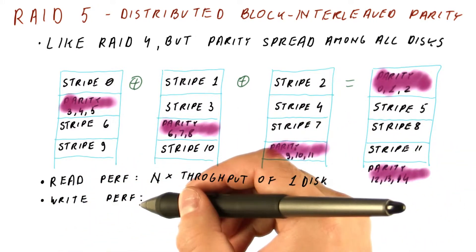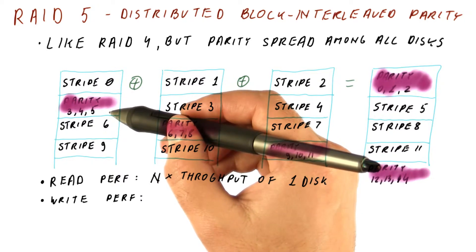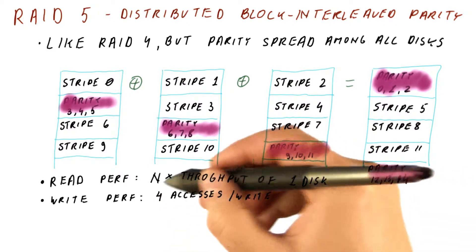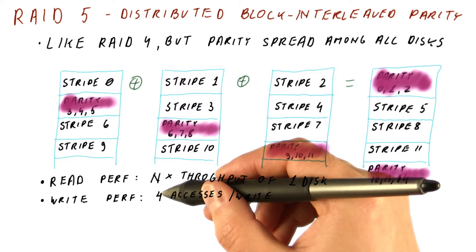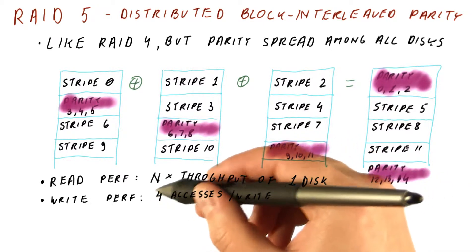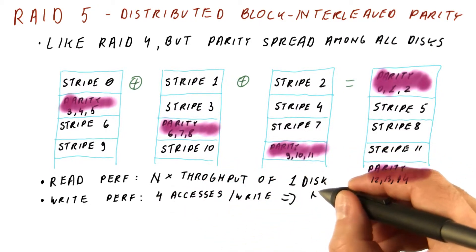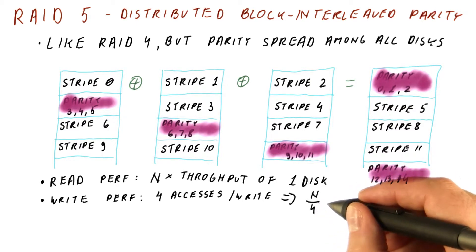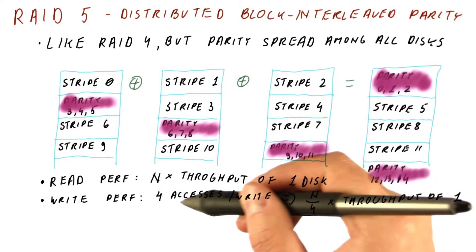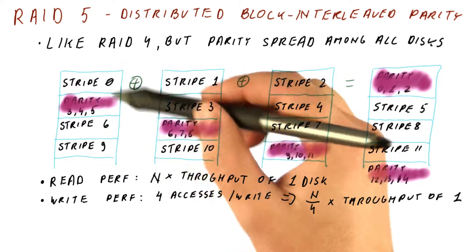Write performance is still affected by having to read and then write the data and the parity. So a single write results in four accesses — we would read the data block and the parity, and then we would write the data block and the parity. So there are four accesses per write, but they're distributed among all the disks. So we get n over 4 times the throughput of one disk. In this case, with four disks, write performance equals the throughput of one disk used without RAID.